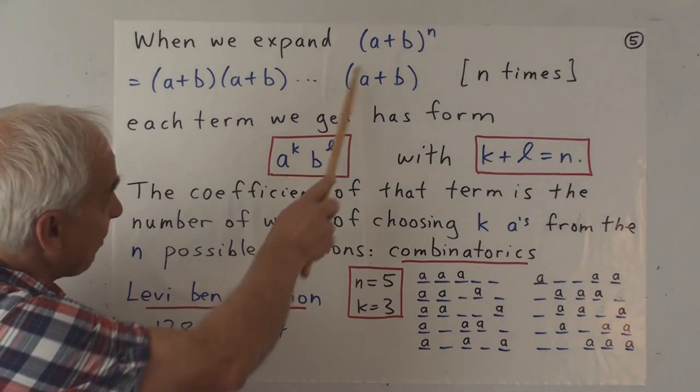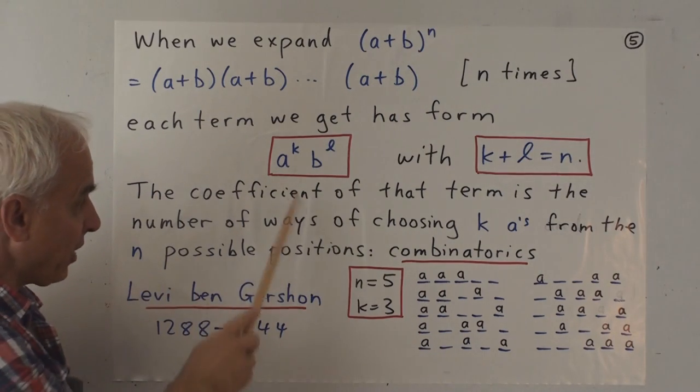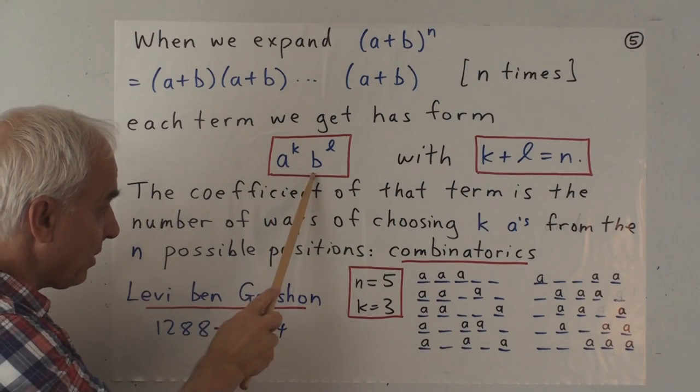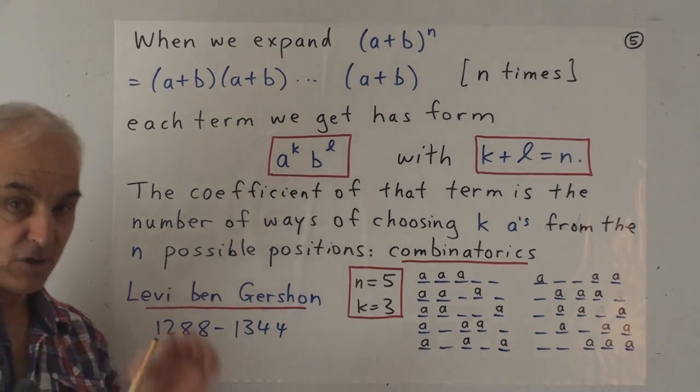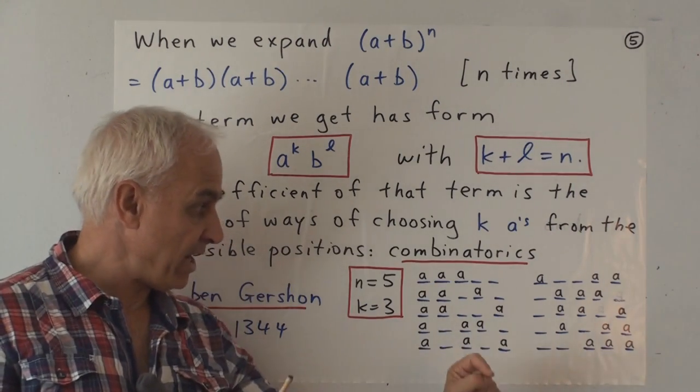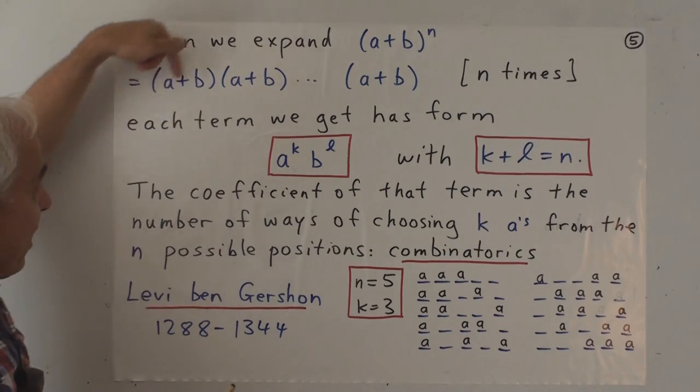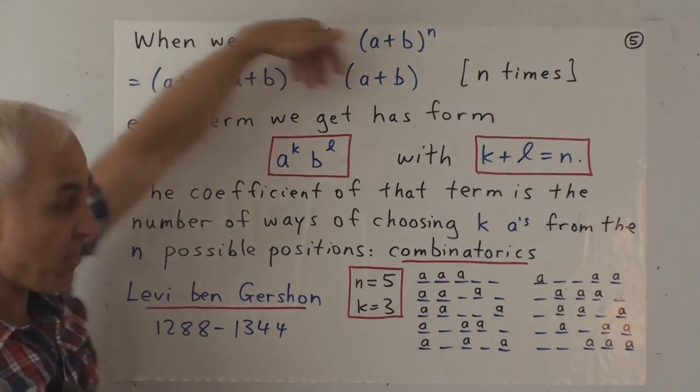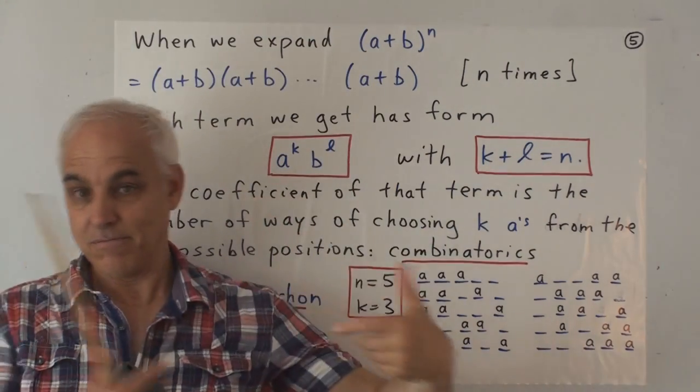And that means that when we expand a plus b to the fifth and look at the coefficient of a cubed b squared, that coefficient is going to be 10, corresponding to these 10 ways of choosing the 3 a's from the product of 5 binomials.